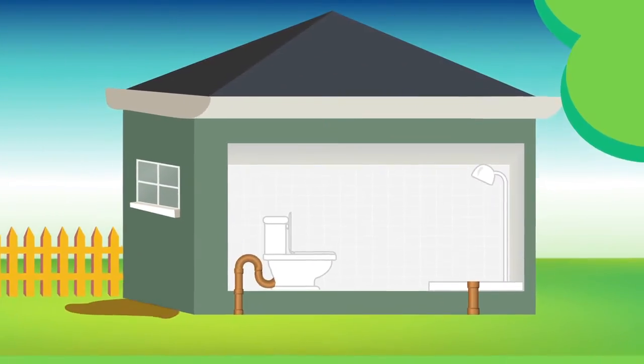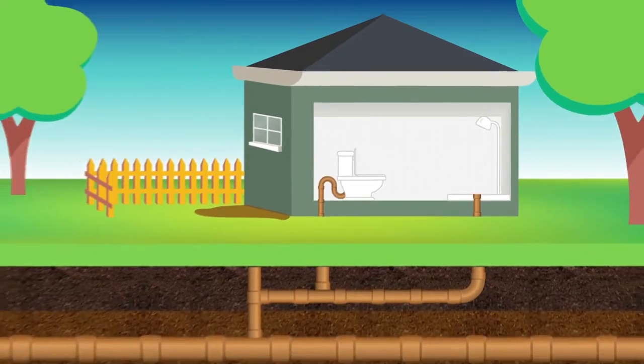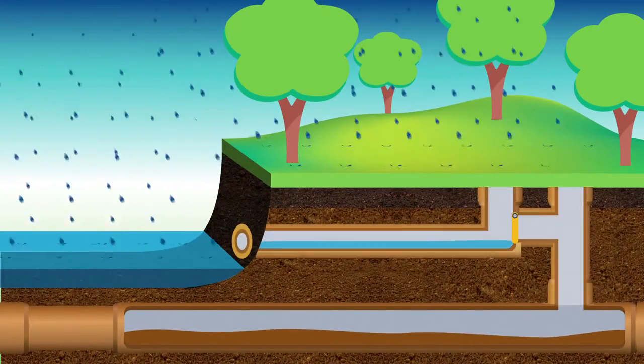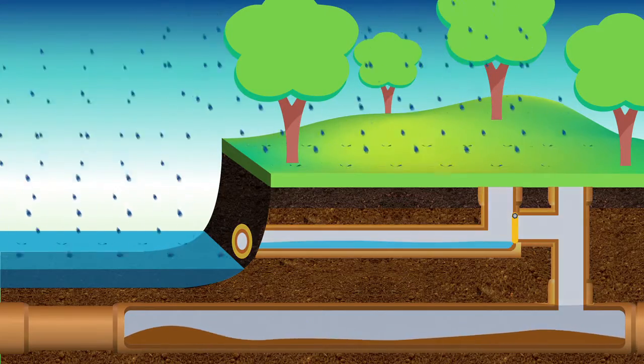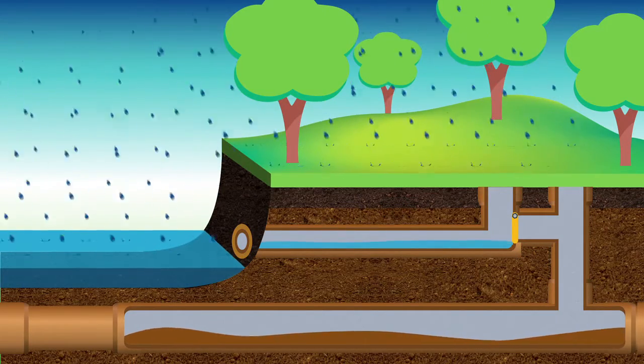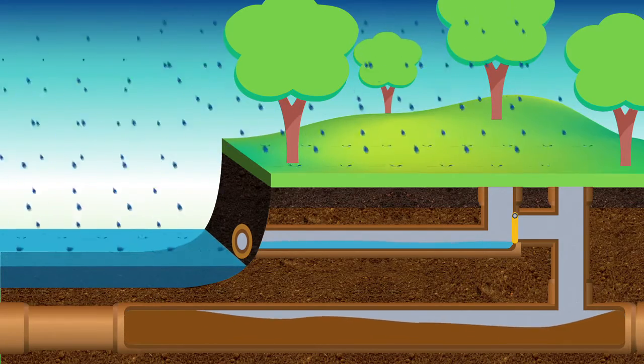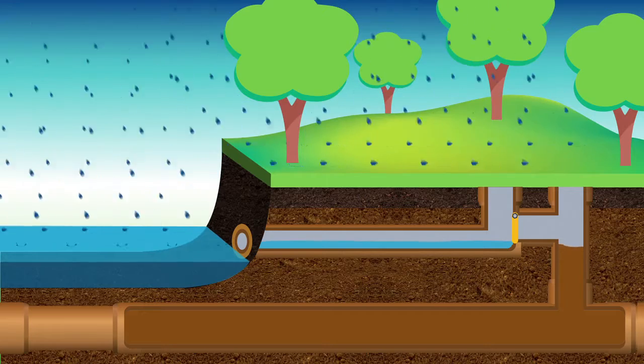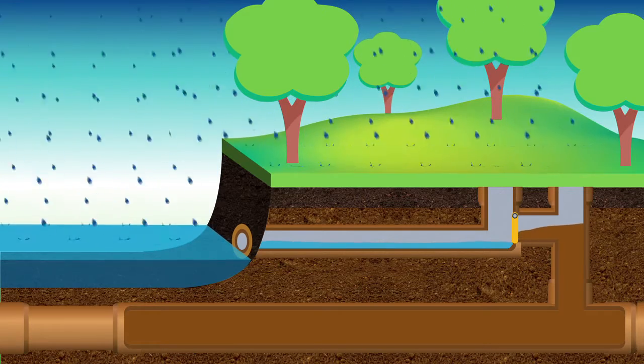And instead of backing up into people's gardens or homes, the system is designed to overflow into local rivers or creeks through emergency relief structures. These are outlets within the sewage system that overflow when the system exceeds its capacity. It's important to note that the overflow that spills into rivers and creeks is heavily diluted.